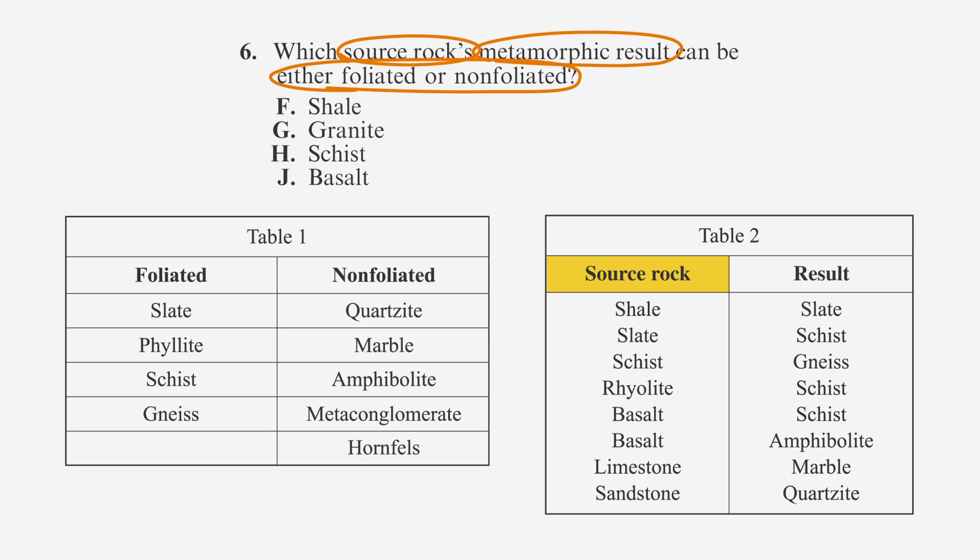We circled source rock in the question, so let's start with the source rock column of table two. Basalt appears twice in the source rock column, but results in two different rocks, schist and amphibolite.